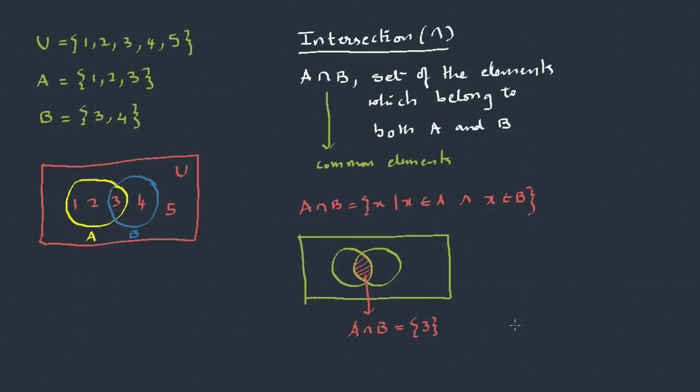Here the common element is 3. Now what if there is no common element? That's A intersection B is null. Then these sets A and B are called disjoint sets.